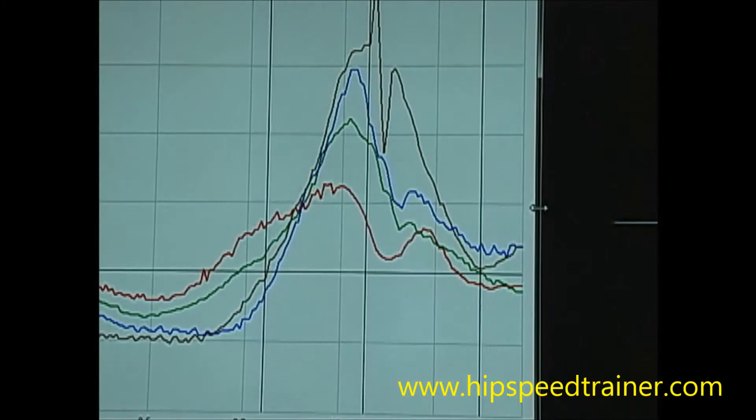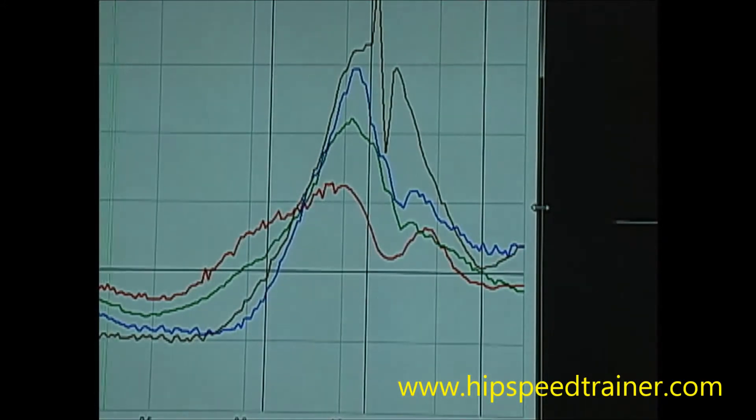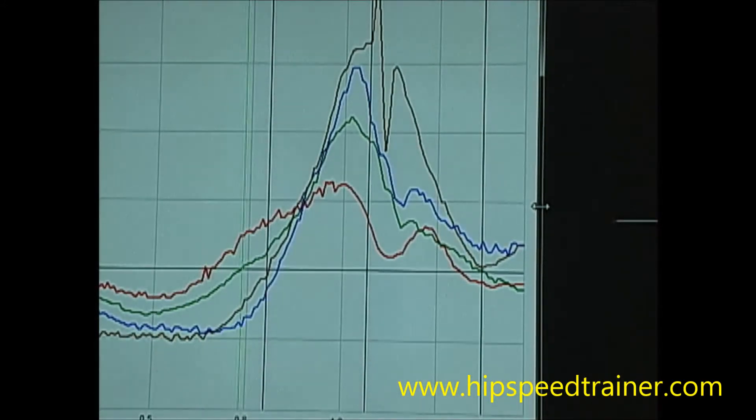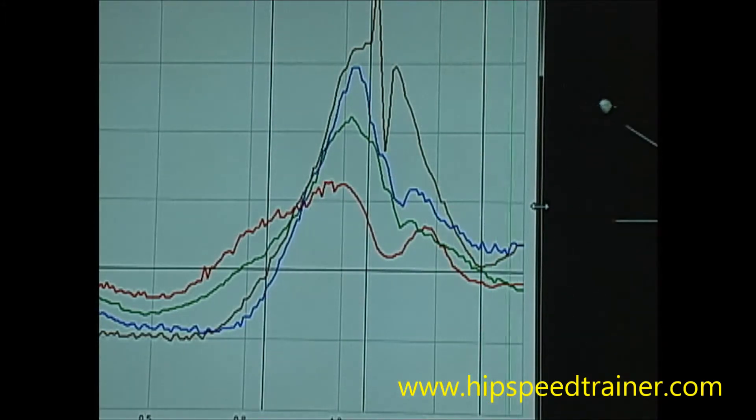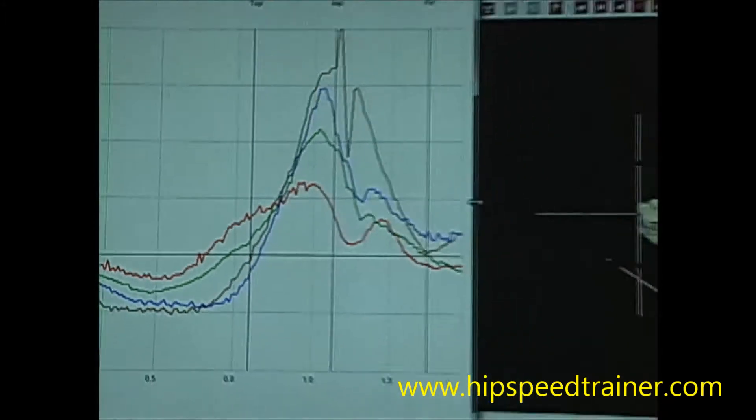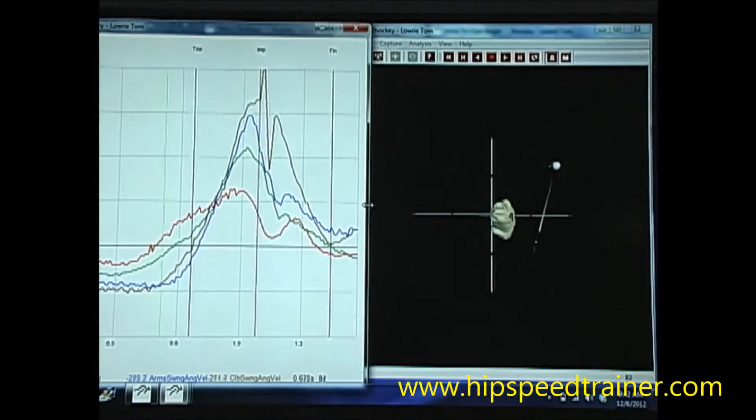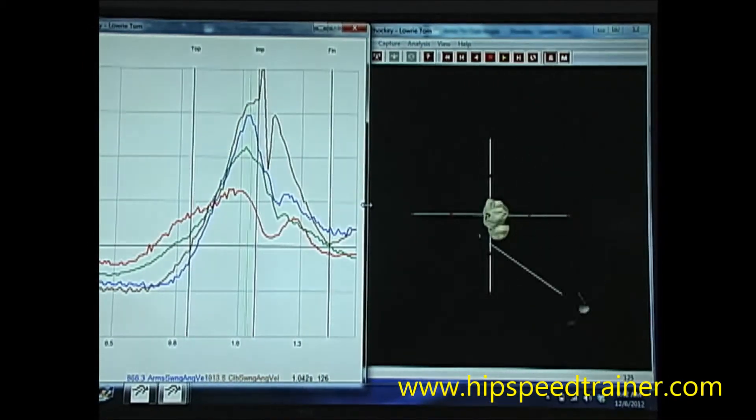But you'll also notice the deceleration orders are very similar to a golf swing. We have pelvis decelerating, upper body, arms, and then stick. Again, what we have found with most ground-based rotational sports, this is how the body wants to move to maximize its efficiency and power. It's always the same.